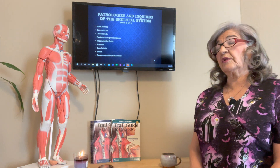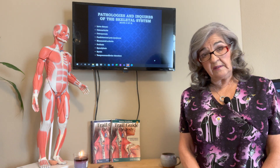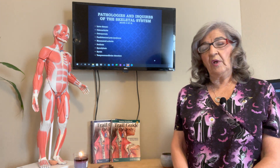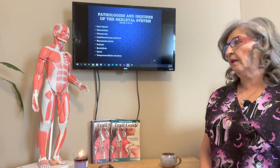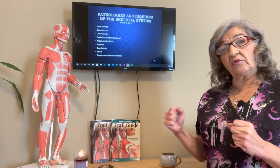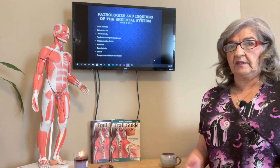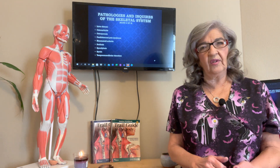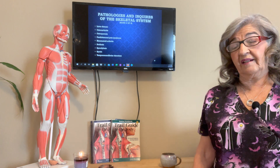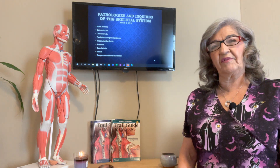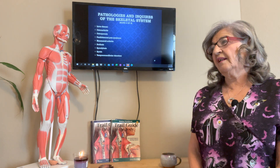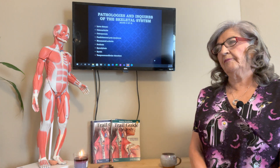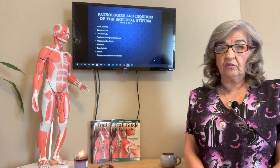Next is sprain. Remember: sprain happens in ligaments, while strain with a T is for tendons — tendons attach muscle to bone. A sprain is a torn or overstretched ligament beyond its range of motion. It usually occurs when twisting your ankle or with athletes — the knee ligaments are also a common site. It happens with sports, falls, and twisting of the ankles. You don't want to massage during acute inflammation.